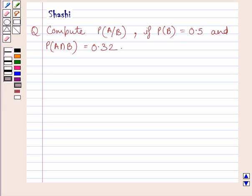Hello and welcome to the session. Let us discuss the following question. Compute probability of A upon B if probability of B equals 0.5 and probability of A intersection B equals 0.32.